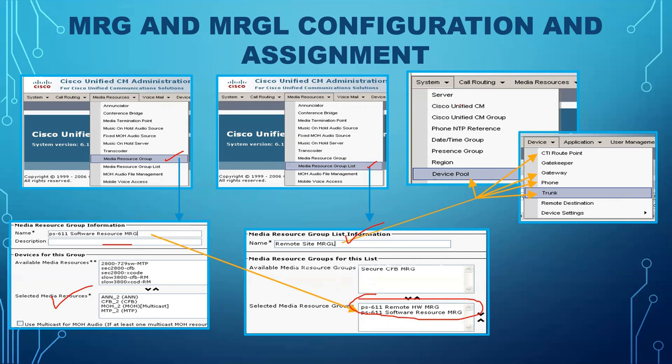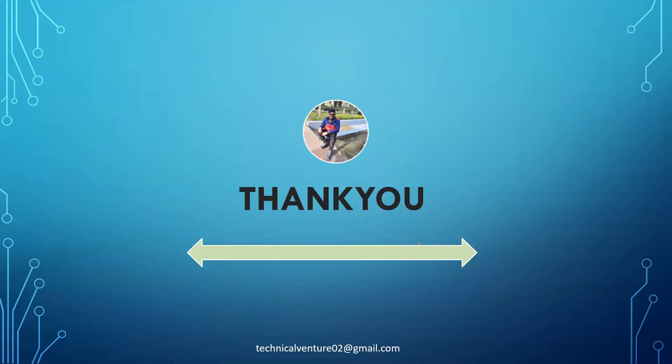Once you have created your Media Resource Groups and Media Resource Group List, you can assign the MRGL to various devices: the device pool, the CTI route point, the gateway, the phone, and the trunk as well.